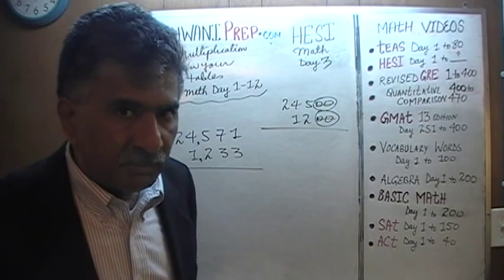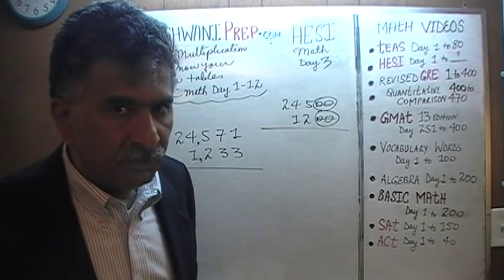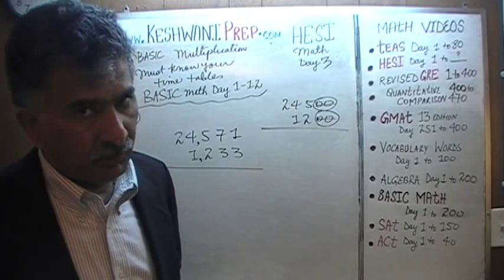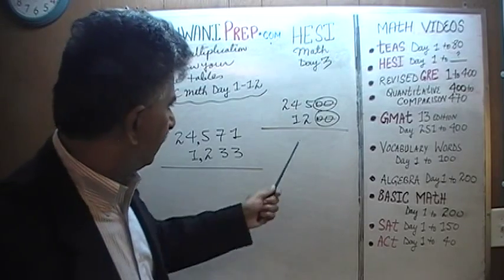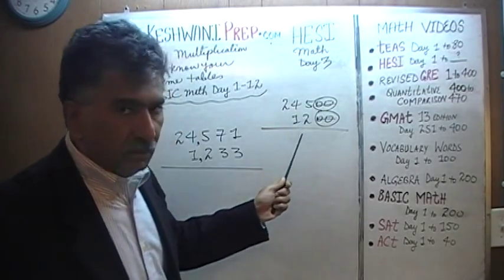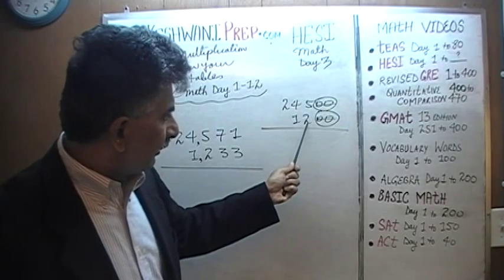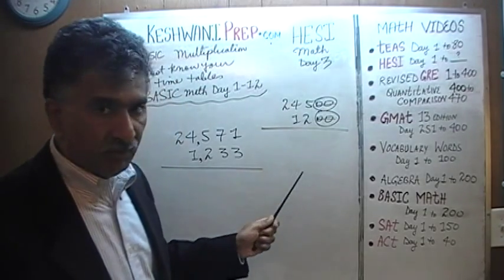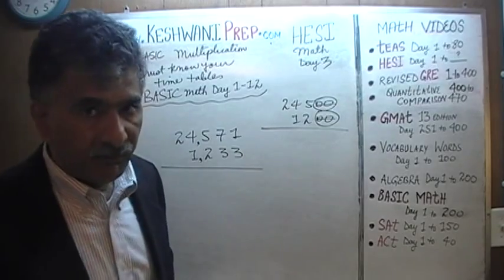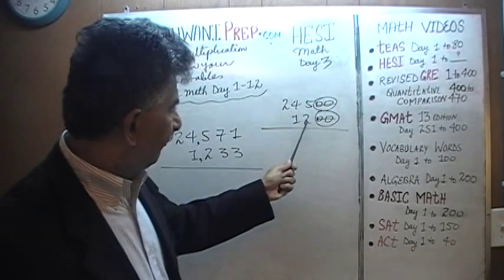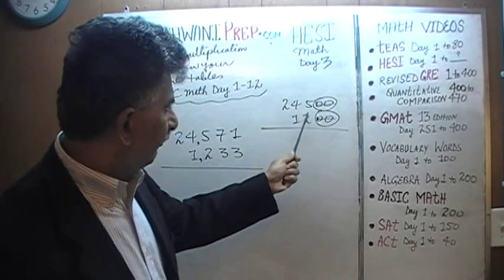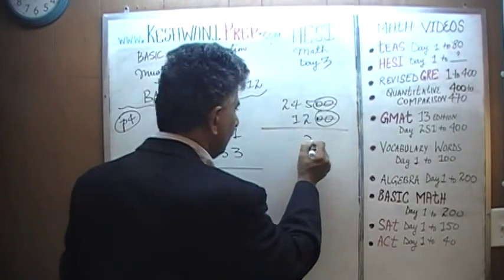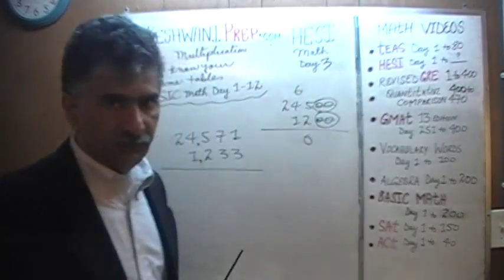I'm not going to do it in a baby way. I'm going to assume that you know your table of 12 — and if you do not know your table of 12, you're going to have to memorize it. So 12 times 5: 12 fives are 60. That's a 0, carry 6.